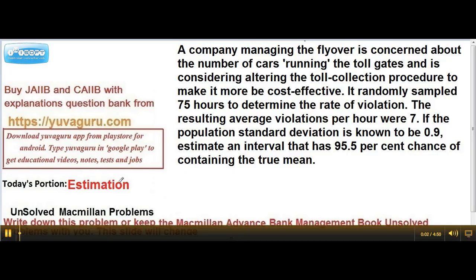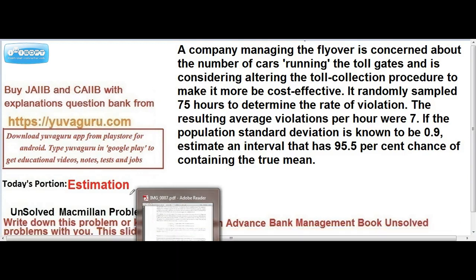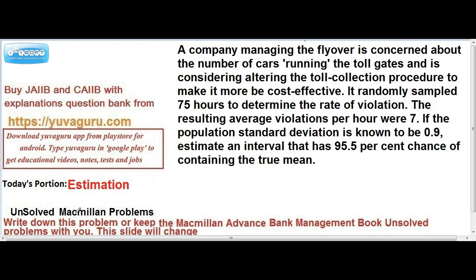Let's solve the 15th and 16th problem of estimation from the Macmillan's book for CAIIB. The problem: a company managing a flyover is concerned about the number of cars driving through toll gates and is considering altering the toll collection process. It randomly sampled 75 hours to determine the rate of violation — meaning how many cars are going without paying the toll.